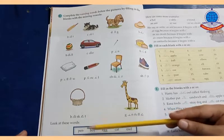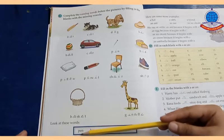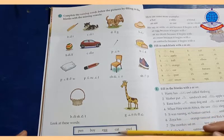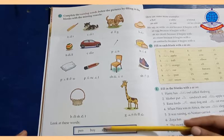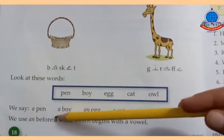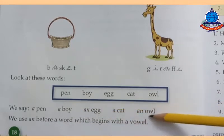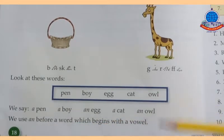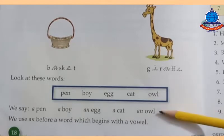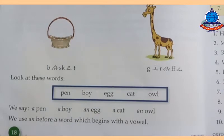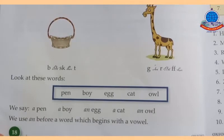Now look at these words: pin, boy, egg, cat, owl. Some of these words start with a vowel letter, while some do not. We say: a pen, a boy, an egg, a cat, an owl. We use 'an' before a word which begins with a vowel. Words that start with a vowel letter take 'an', while words that do not start with a vowel letter take 'a'.